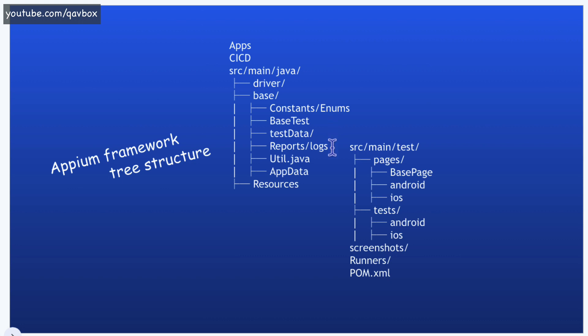Reports and logs are another component. You can have Allure reporting with your Appium framework, or Extent Reports — including initialization, sending logs, attaching screenshots, generating HTML reports. All these concepts would be held inside this component, which could be a package or a .java file.